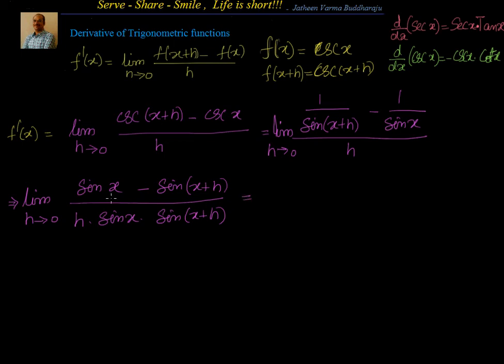Now this is in the form of sin c minus sin d. Sin of c minus sin of d is equal to 2 cos c plus d by 2 multiplied with sin of c minus d by 2. I can leverage that formula.